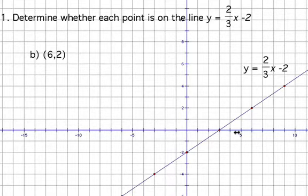Now going back to our graph of y equals 2/3x minus 2, we determine whether the point (6,2) is on this line. Our x-coordinate is 6, so we go over to 6 and up to 2, and we find that point B is on the line. As we found before, this point does fall on the line.